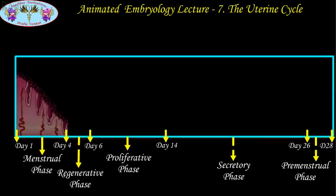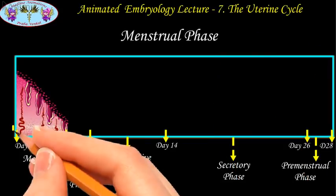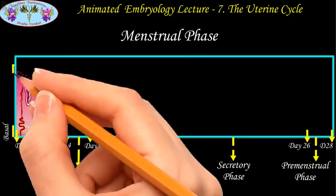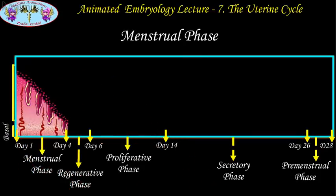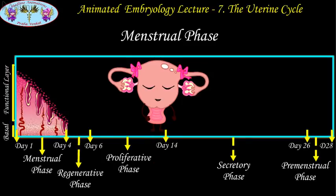The first phase is the menstrual phase, manifested by uterine bleeding persisting from the first to the fourth day. It is associated with exfoliation of the functional layer of the endometrium, resulting in hemorrhage. It occurs due to withdrawal of progesterone because of regression of the corpus luteum. Various scholars consider it as the weeping of the uterus for the loss of an ovum that may have been fertilized and converted into a zygote and consequently into a pregnancy.